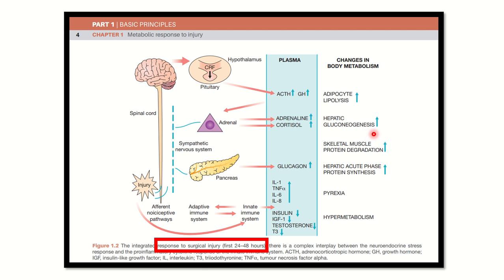Cortisol increases hepatic gluconeogenesis — meaning glucose production increases and is ready in the blood, because we need more food during any emergency condition. Skeletal muscle protein degradation also occurs; amino acids and other end products of protein breakdown are released. Then from the pancreas, glucagon is released, and hepatic acute phase protein synthesis occurs. Important inflammatory markers such as interleukin-1, tumor necrosis factor alpha, and interleukins 6 and 8 are released, causing pyrexia.